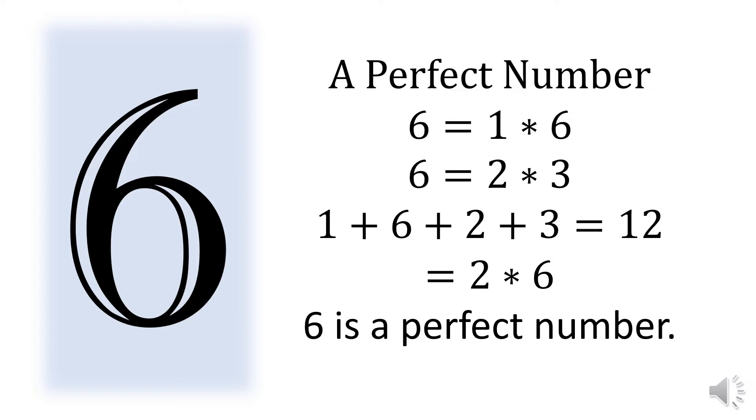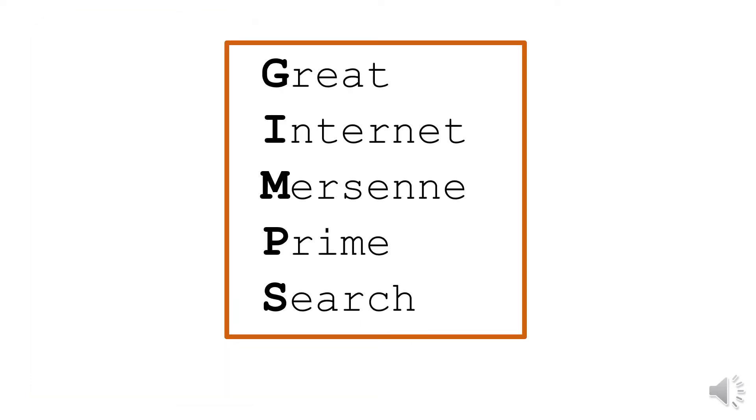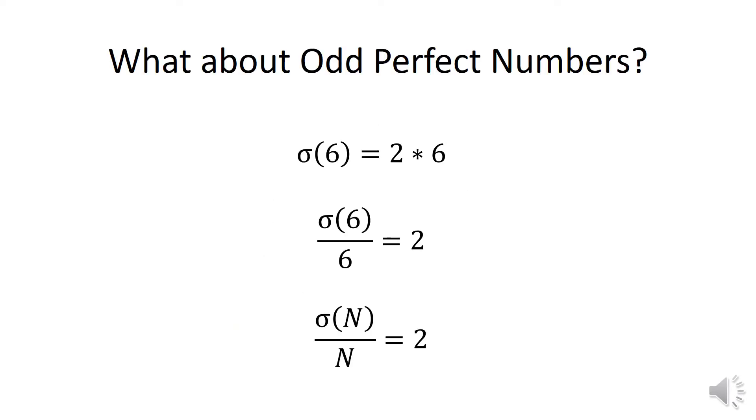Using a worldwide distributed computer system called GIMPS, the Great Internet Mersenne Prime Search, users extended the number of known perfect numbers to 51. All of these perfect numbers are even. But what about odd perfect numbers?